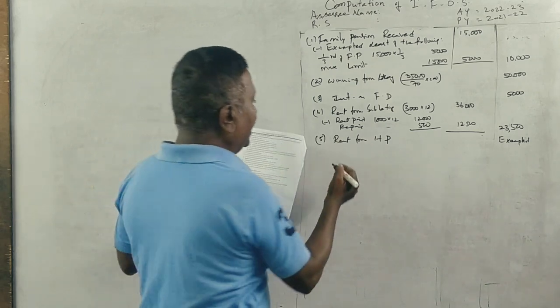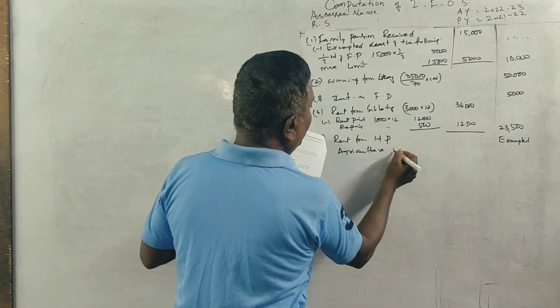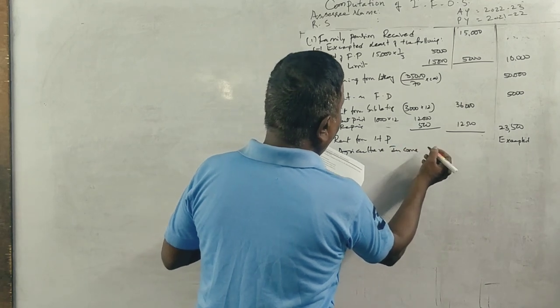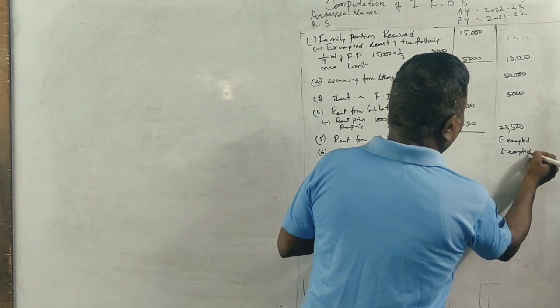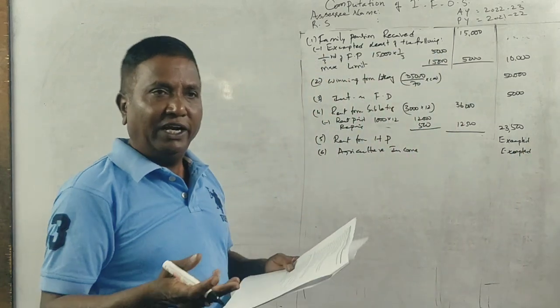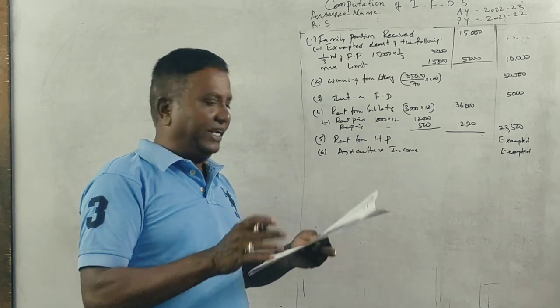Next, agricultural income. India is not coded. We assume that it is from India, given exempt from. Out of countries are fully taxable. India is exempted.